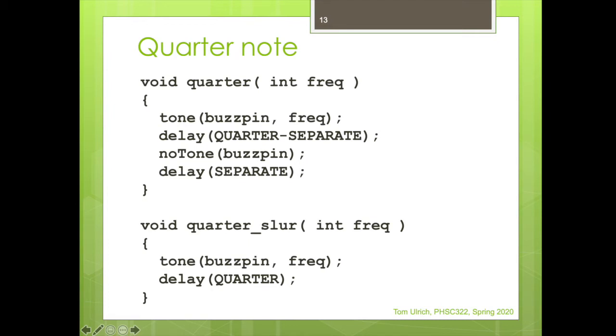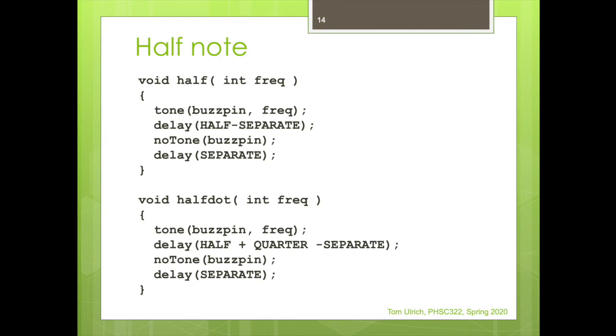And I'm going to move through this quickly, but I'm assuming you'll kind of look at it and stop and think about it a little bit. For quarter note, it's pretty much the same deal. You hit the tone for the frequency. You delay for quarter minus the separate portion. And then you do no tone and you wait for separate. If it's slurred, so you're at an E and you want to slur up to an F, you would say quarter slur for the E and then quarter for the F. So the slur is just not having the no tone part. For half note here, same structure. We start the tone. We wait for the time, the length of a half note minus the separation. Then we do no tone. And what I did is a dotted half note here is what this half dot is. So that's the same structure. But instead of delaying for half, it's half plus a quarter because that's what a dotted half note is.